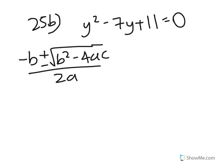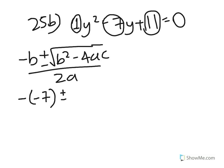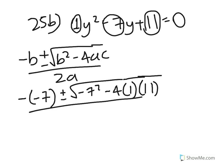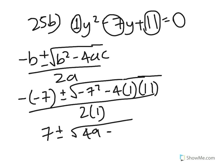Now what are a, b, and c? The coefficient of x squared, which is 1, is a. Minus 7 is b, and 11 is c. Substituting into the formula: minus minus 7, plus or minus square root of negative 7 squared minus 4 times 1 times 11, all over 2 times 1. This simplifies to 7 plus or minus the square root of 49 minus 44, over 2.